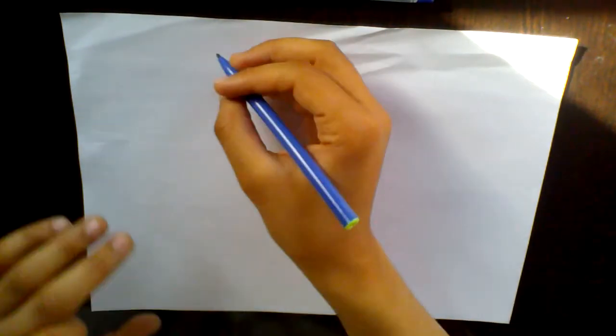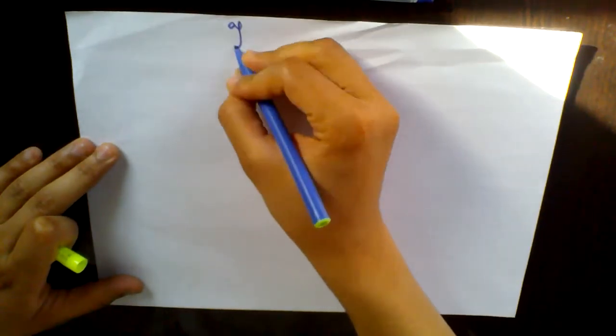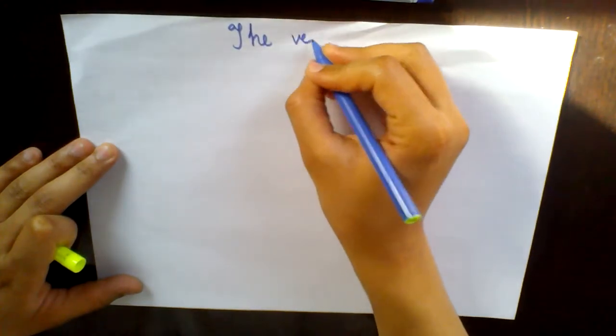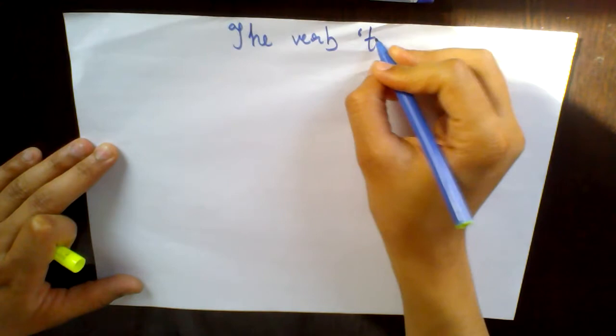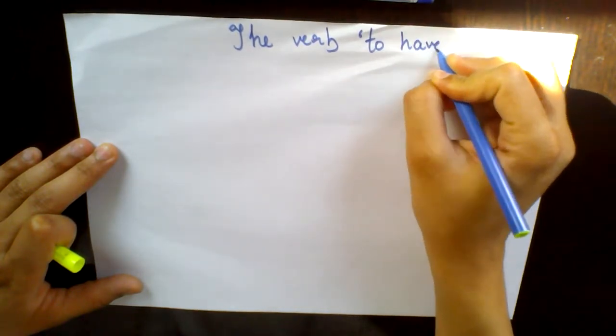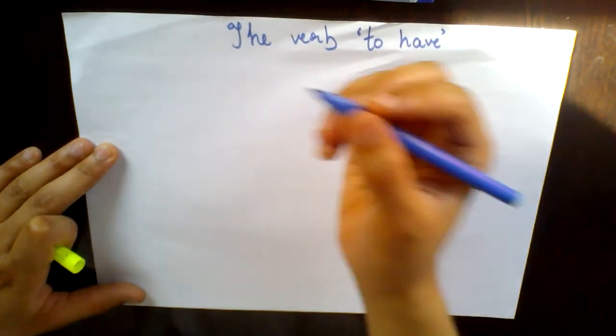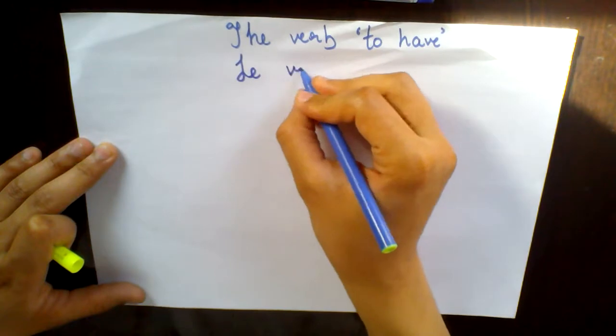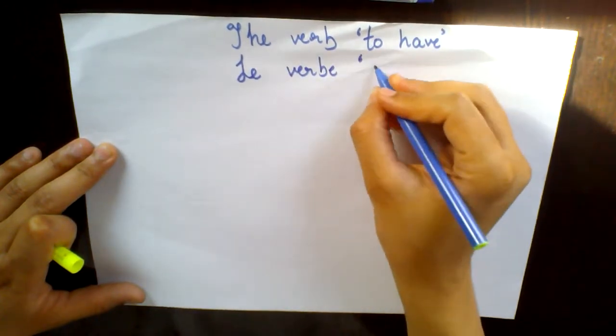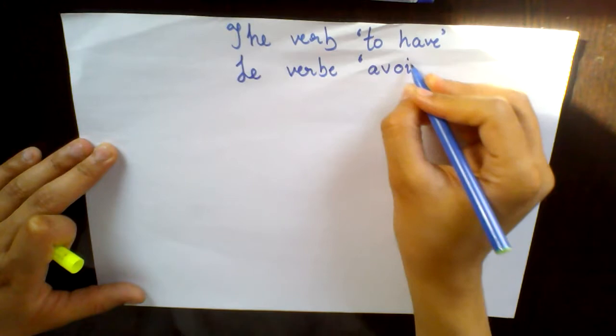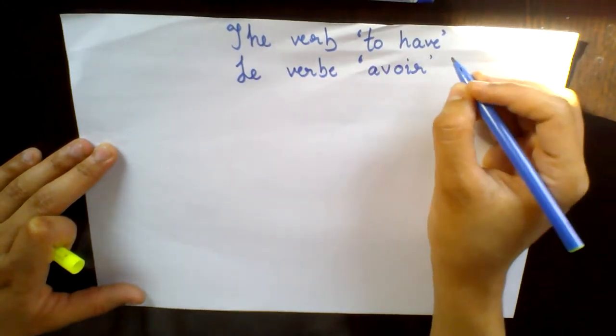In this lecture I will be teaching you the French verb avoir, which means 'to have'. In the last lecture we had learnt the verb 'to be', which was the verb être. Now the translation will be the verb avoir. So basically A-V-O-I-R is pronounced as avoir.